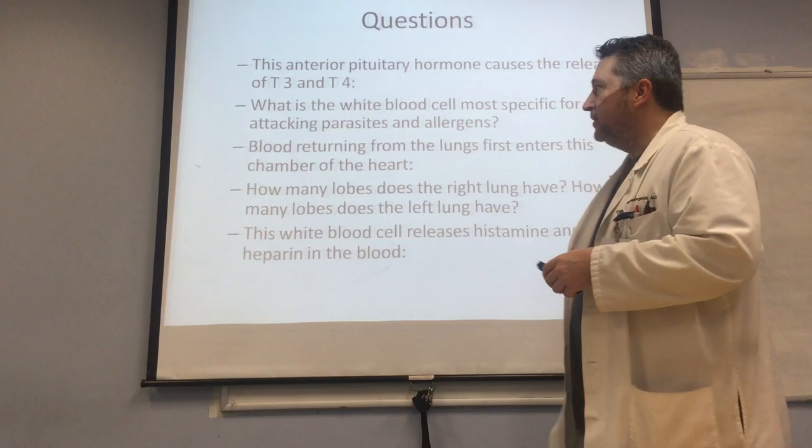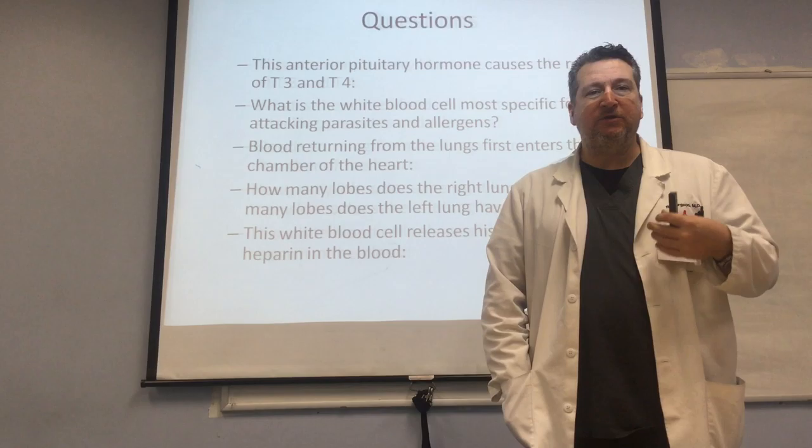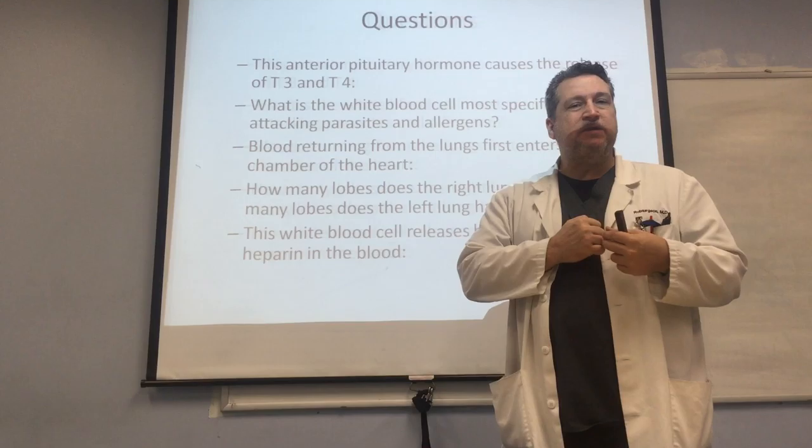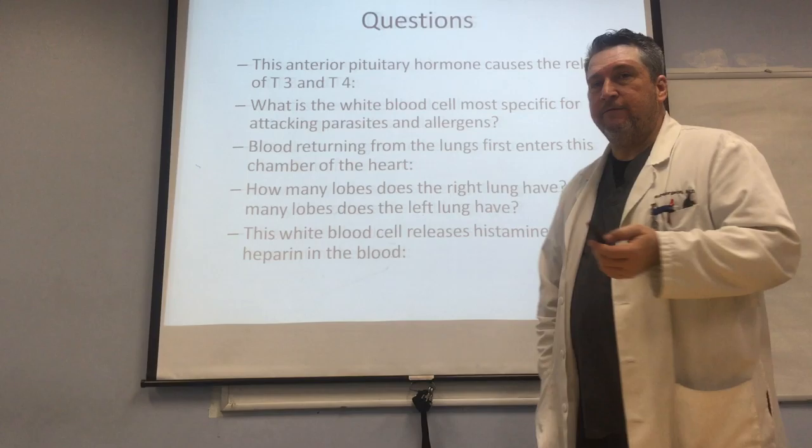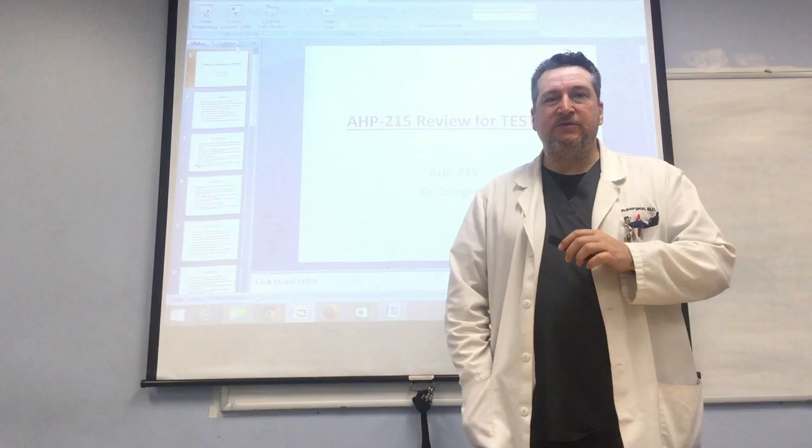How many lobes does the right lung have? The right lung has three lobes, the left lung has two — the reason is that the heart, although centrally located, is kicked over to the left, taking up some of the room where the left lung could normally be. This white blood cell releases histamine and heparin in the blood — this is another granulocyte, the basophil, and it is the one granulocyte that is not a phagocyte.